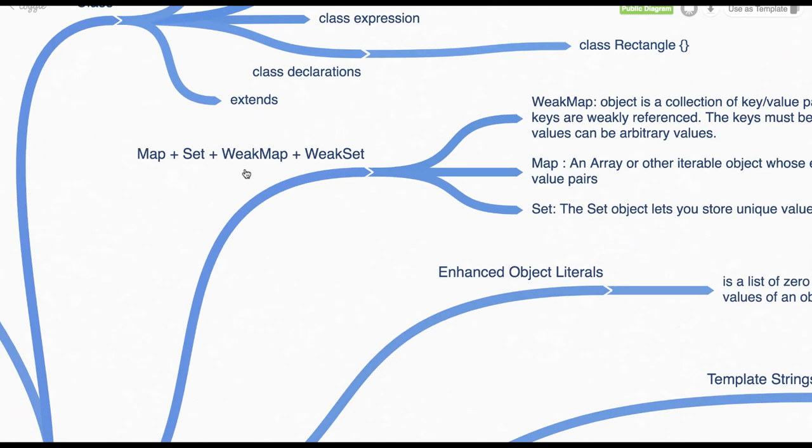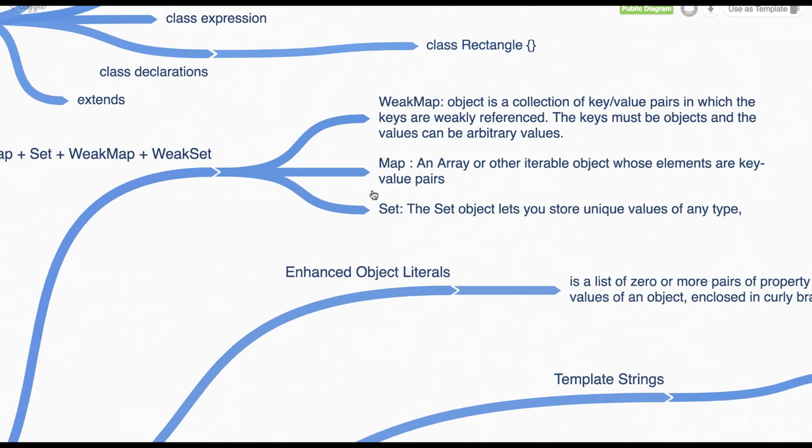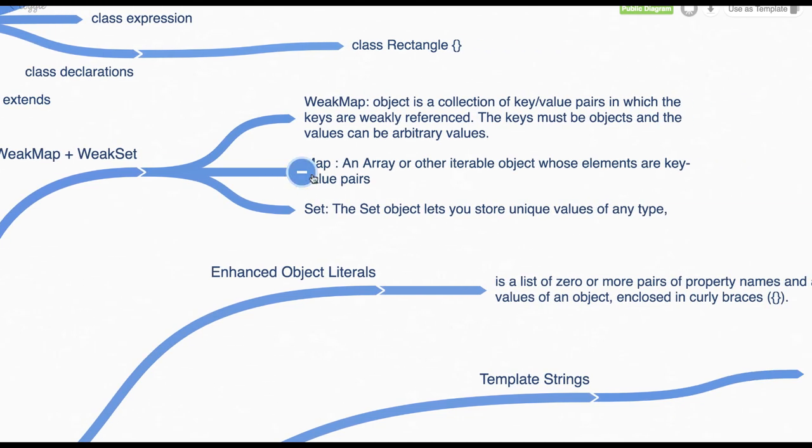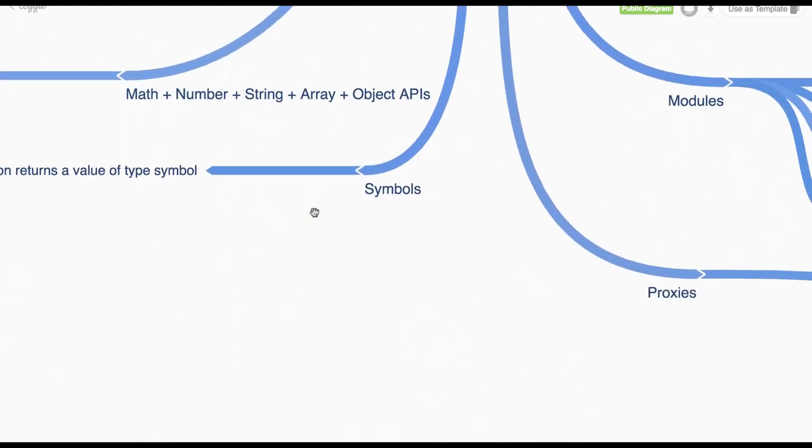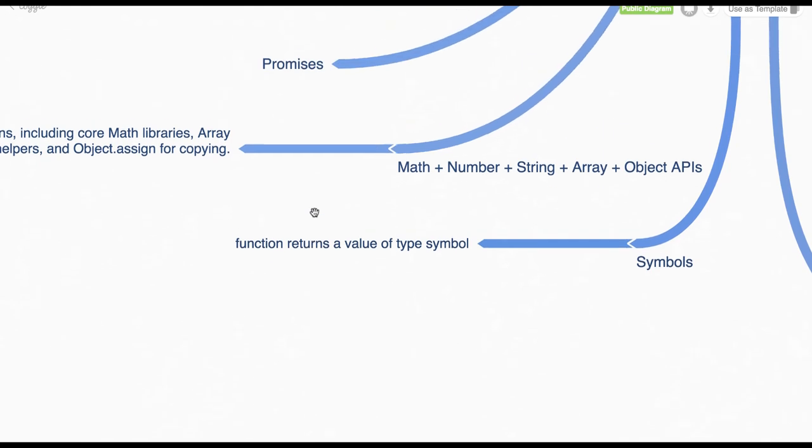And then Set, WeakSet, WeakMap, and Map. So Map is an array or other iterable objects. Set and Map are iterable objects. Earlier there was no such kind of collection object in JavaScript. Now with the array we have a Set which is not allowing duplicate values, and we have a Map which is storing key-value pairs in a collection.